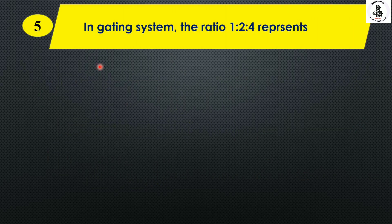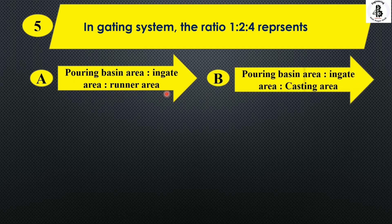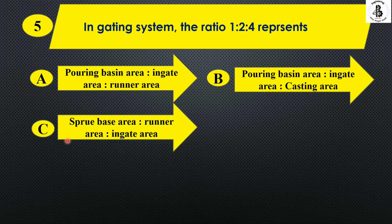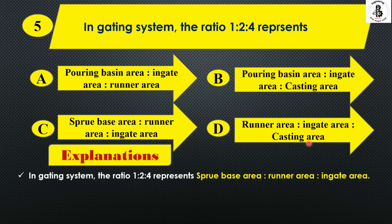In the gating system, the ratio 1:2:4 represents: Option A pouring basin area, ingate area, runner area; Option B pouring basin area, ingate area, and casting area; Option C sprue base area, runner area, and ingate area; Option D runner area, ingate area, casting area. The gating system ratio represents the cross-sectional areas of sprue, runner, and ingate — sprue base area, runner area, and ingate area. The right answer is Option C.